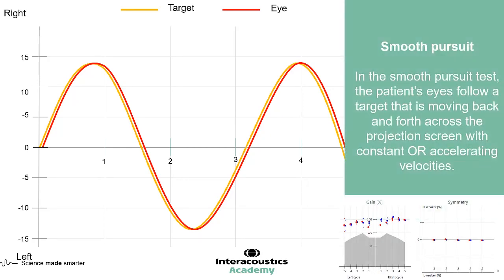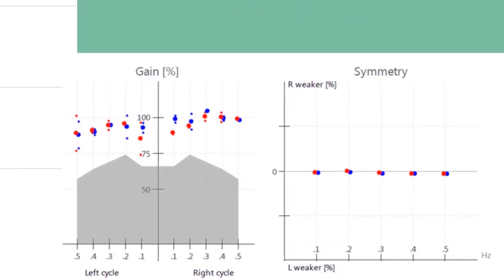We can look at different parameters within the smooth pursuit. We can look at gain as being a measure of the eye movement versus the target movement, and whether the movement is within phase of the target movement.